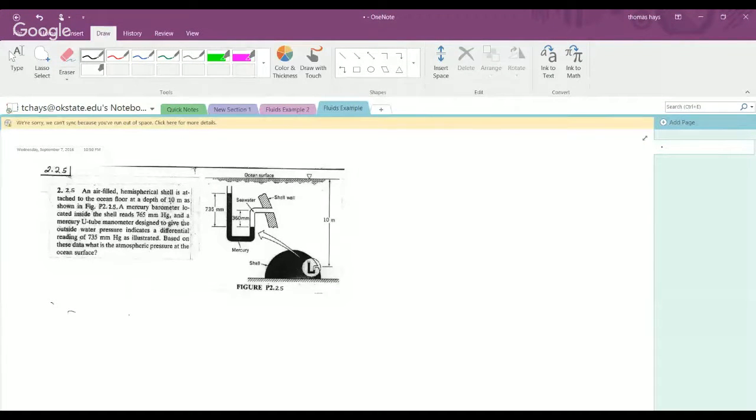So the first problem is 225 and I picked it because it's rather interesting. It's basically a manometer problem, but in a very non-traditional fashion, an air-filled hemispherical shell. So basically like you think of some sort of sea lab, some sort of environment for humans down on the ocean floor.